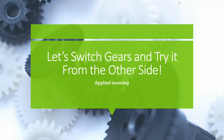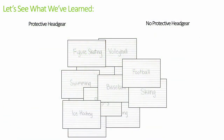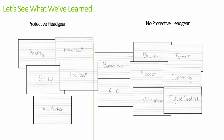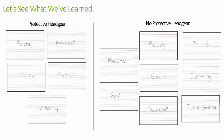Let's switch gears and try to apply what we've learned by sorting from the other side of the card. Now we have a stack of cards where the term is face-side up, so let's see what we've learned. Let's sort again by protective headgear or no protective headgear — do you think you would be able to do this with the term facing up? Great, now let's check our work by flipping them over to the other side with the pictures.